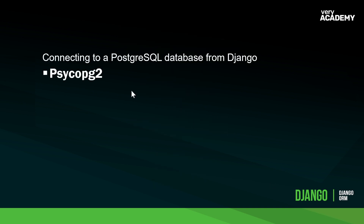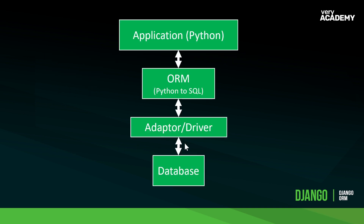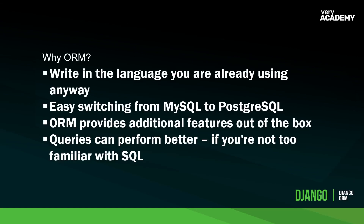For anyone who has connected a Postgres database to Django, you know that you've installed this via pip and then configured it in the settings file. That package is exactly the database driver or database adapter, which allows the functionality of passing data across from our Django application to the database and back again.